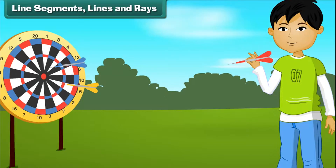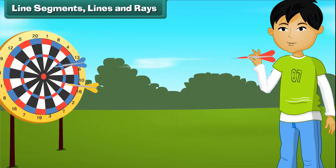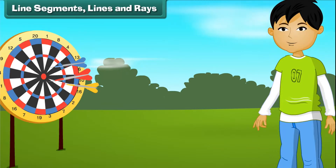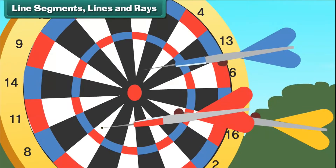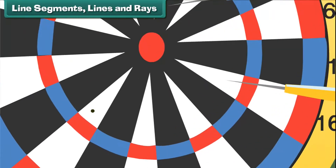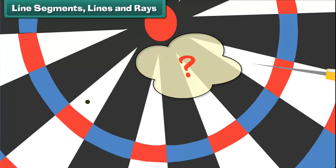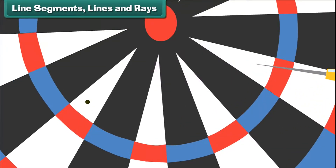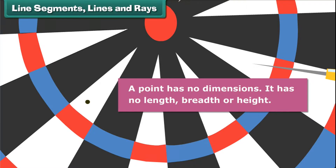Line segments, lines and rays. Rahul perfects his aim by throwing darts at the dart board. Here is one such dart. Let us remove it. What do we observe? The dart has left a mark on the dart board. The mark is called a point. A point has no dimensions.